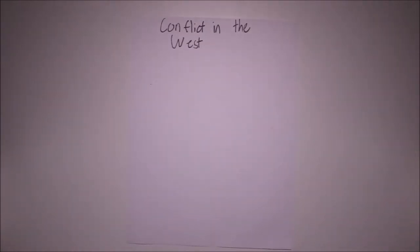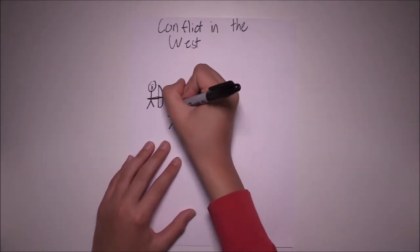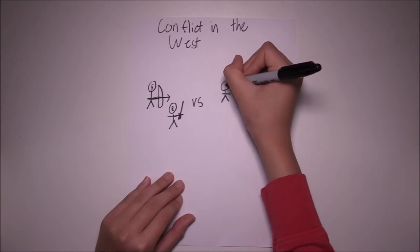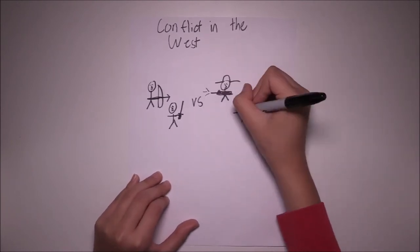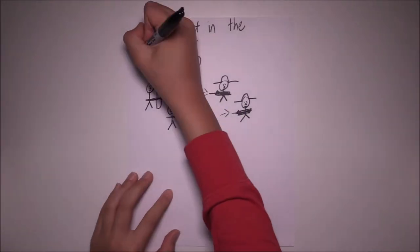Next, we will cover conflict in the West. Conflicts over territories between America and Native Americans continued. One leader named Tecumseh pushed settlers off their lands, but was defeated in the Battle of Tippecanoe.